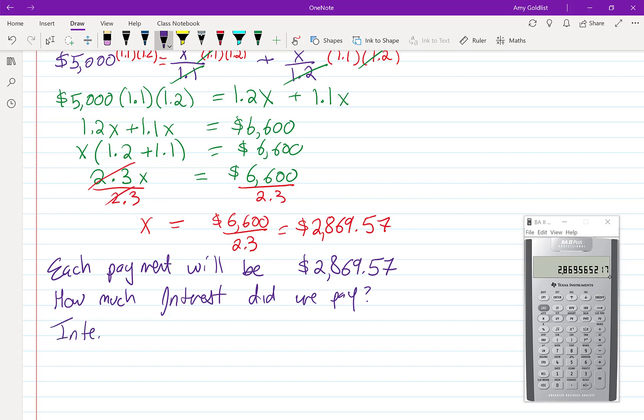In this case, interest is going to be money paid minus money borrowed with no interest calculated. And I'm going to say no PV or FV. So the money I paid is going to be two payments of $2,869.57 and we borrowed $5,000.